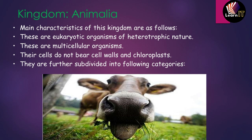All organisms in Animalia are multicellular, meaning they have different kinds of cells forming their structure. Animal cells do not have cell walls, unlike plant cells. They also do not have chloroplasts, because photosynthesis does not occur in animals — chloroplasts are only present in plants.